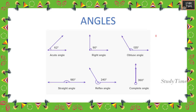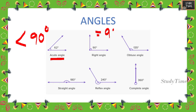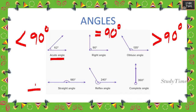First, an acute angle is one in which the angle is less than 90 degrees. If an angle is equal to 90 degrees, we call it a right angle. If an angle is greater than 90 degrees, we call it an obtuse angle. If an angle is 180 degrees, we call it a straight angle.